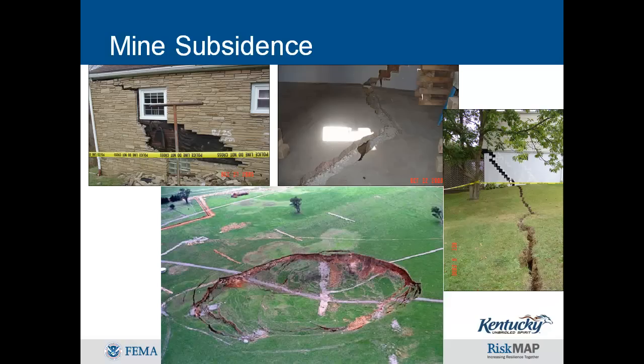In Kentucky, land subsidence is often used interchangeably with mine subsidence, as abandoned subterranean mining operations are the most common cause of subsidence events. For this reason, subsidence is most likely to occur in the eastern and western coalfield regions of the state. Mine subsidence is the movement of the surface due to collapse of mine workings underground, and it can result in damage to structures ranging from cosmetic to structural.